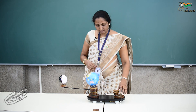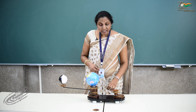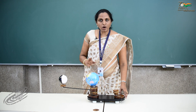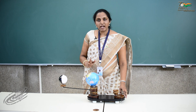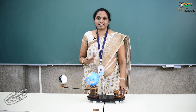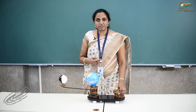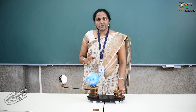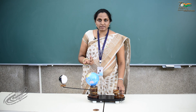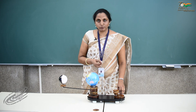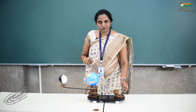Our moon is going around the earth. If the moon was going around the earth without rotating, then at some point we would have seen the other side of the moon. Similarly, if our moon was going around the earth while rotating very fast about its own axis, there would have been a chance for us to see the other side of the moon.